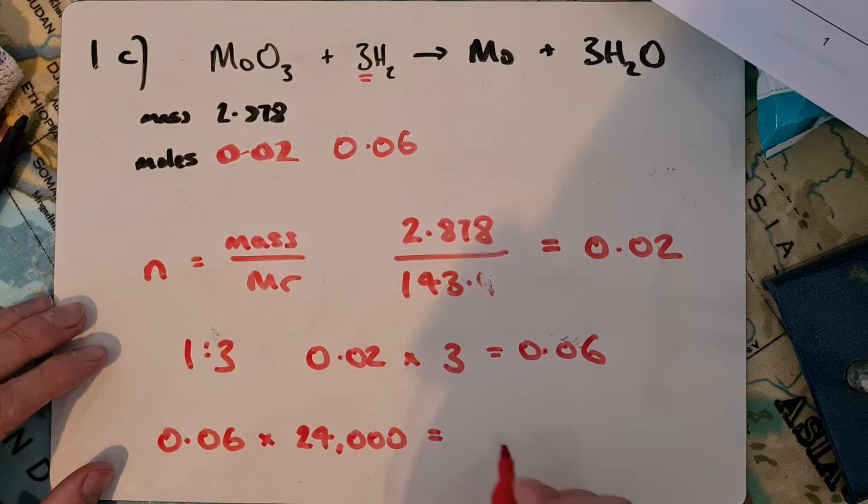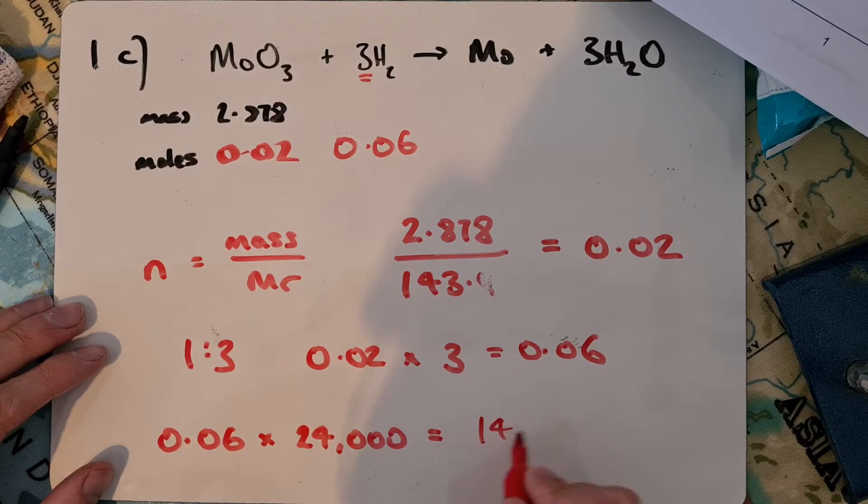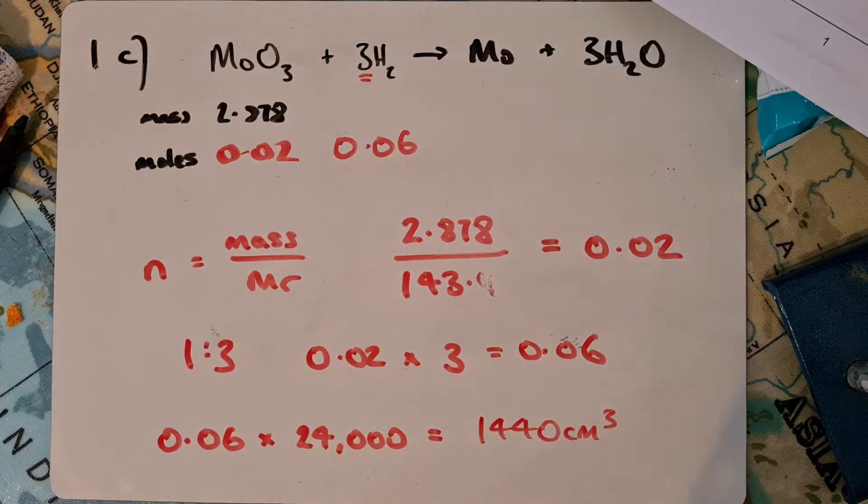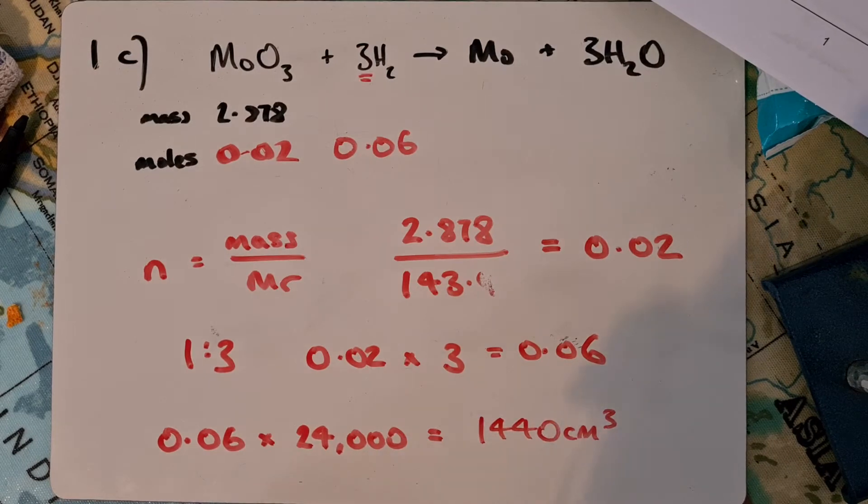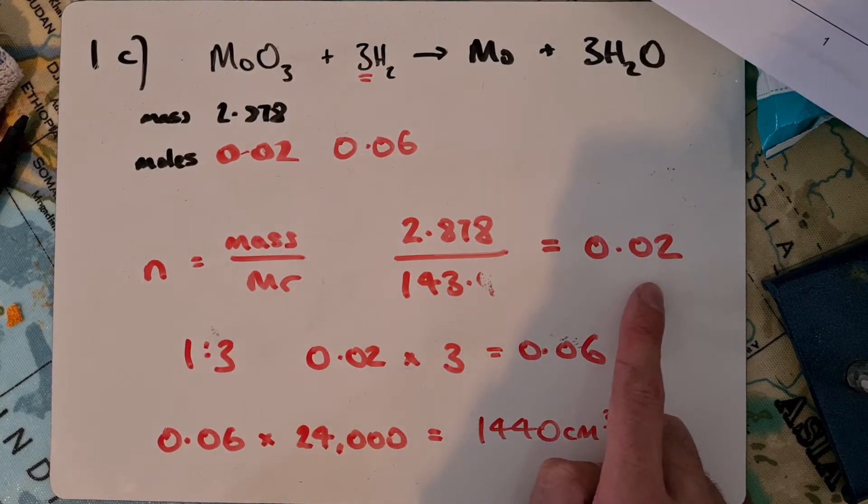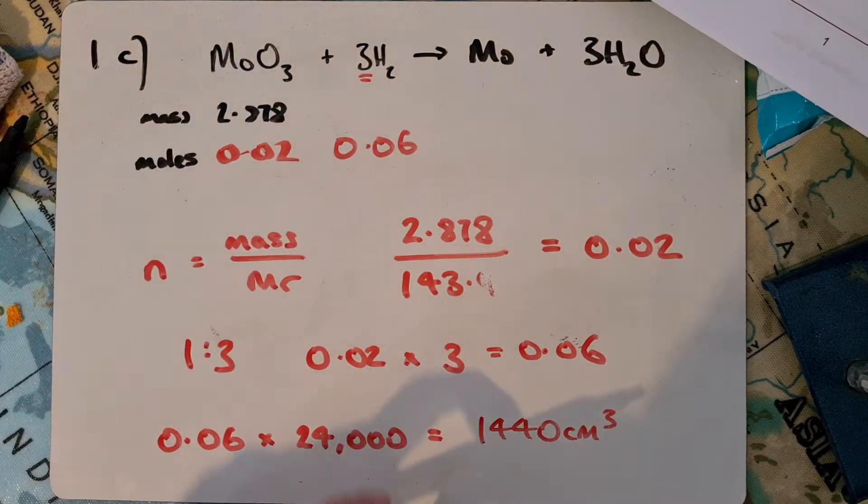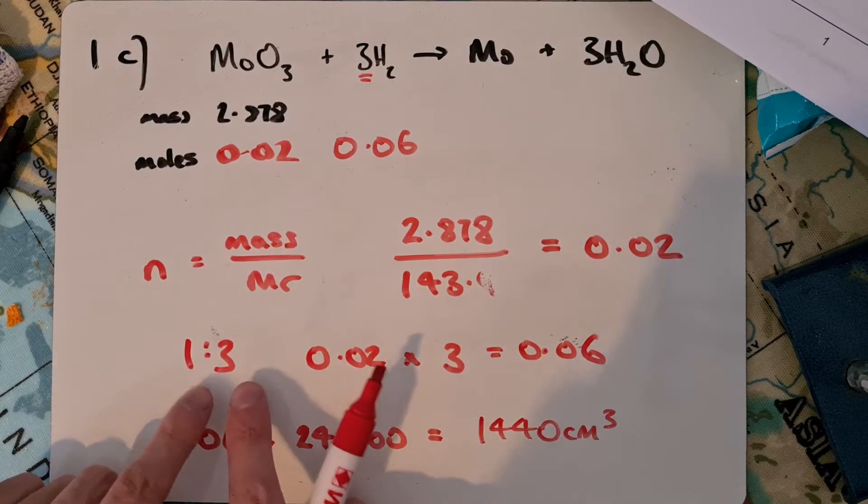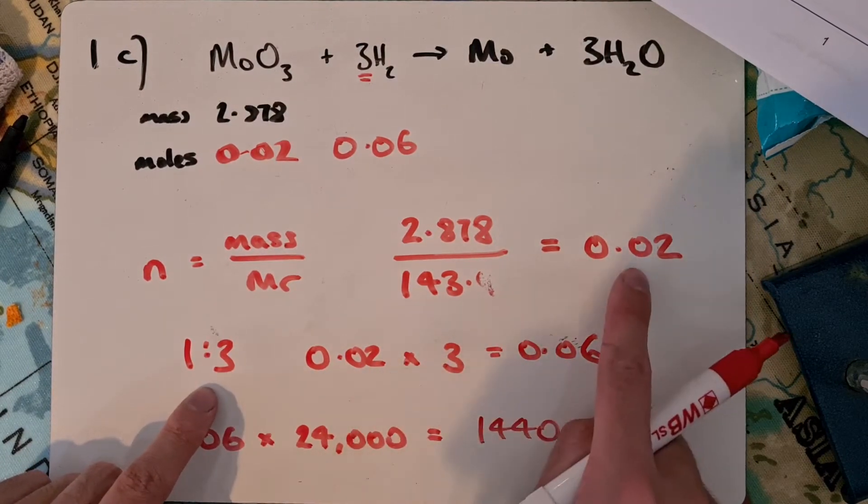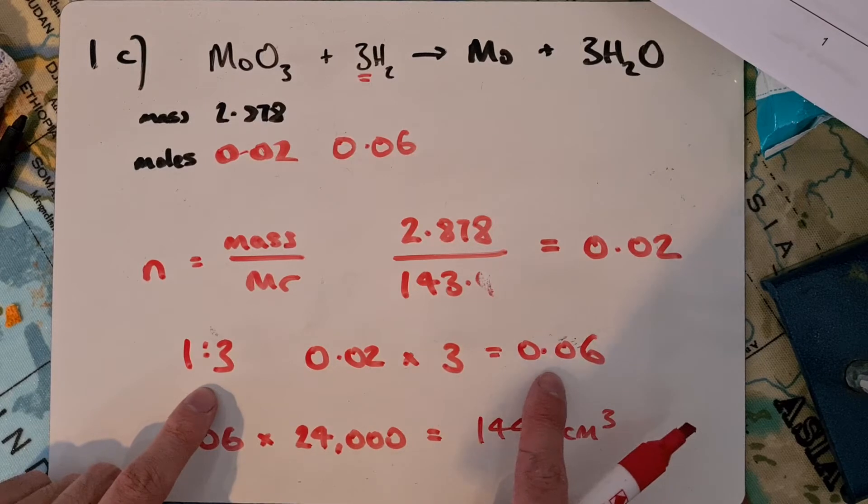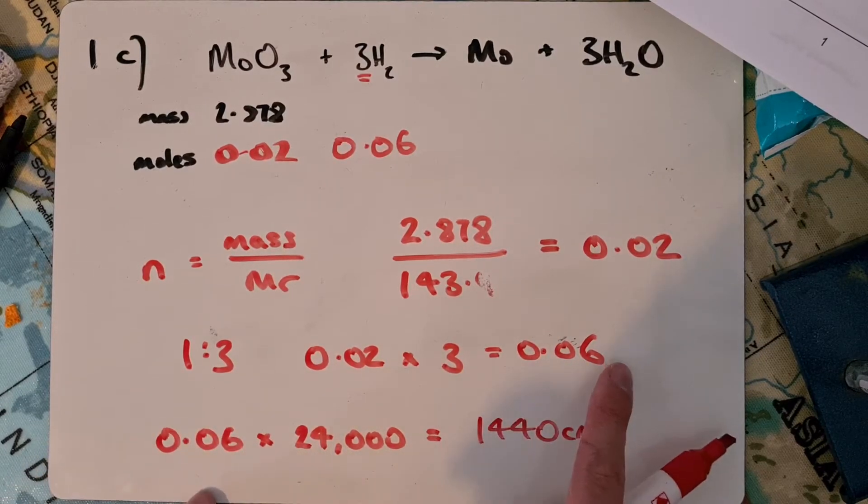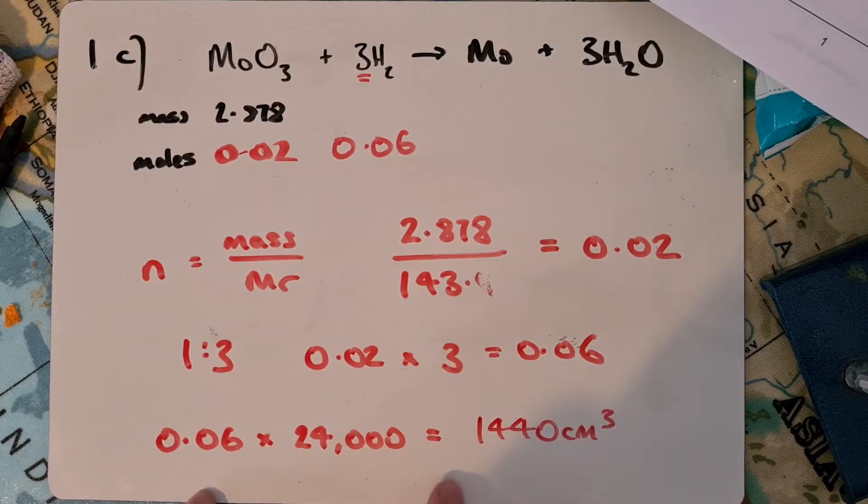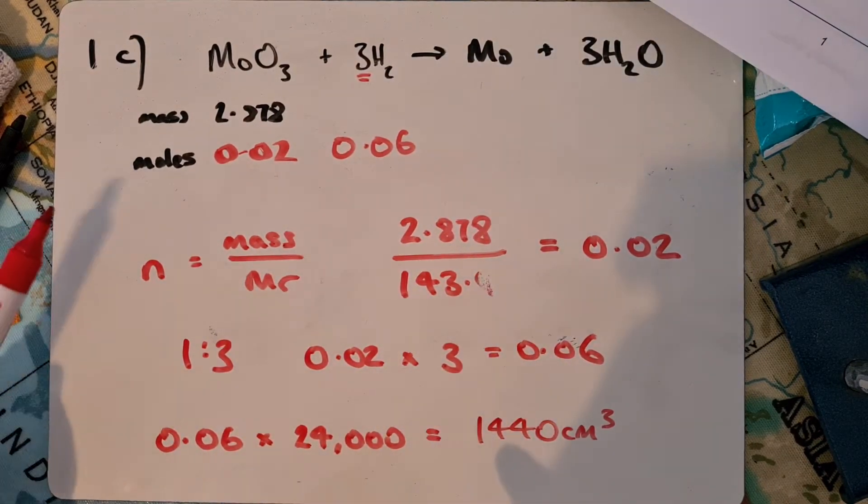To work out the volume of gas, I'm going to have the number of moles, 0.06, times 24,000, which gives 1,440 cubic centimeters. Three marks available: one for working out moles of molybdenum oxide, one for the 1 to 3 ratio, and one for multiplying by 24,000.